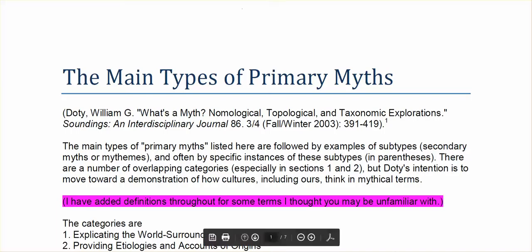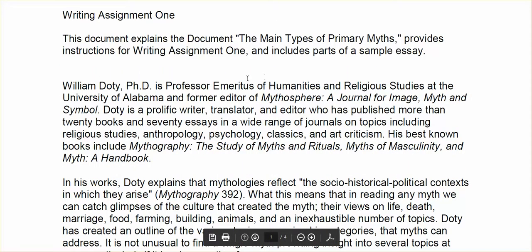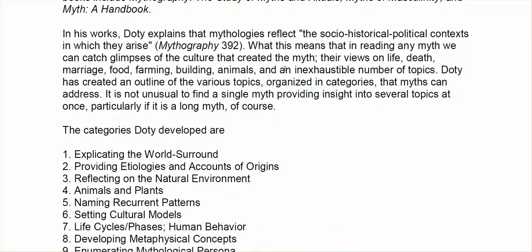Now in the other document — the assignment — Doty explains that mythologies reflect the socio-historical political context in which they arise. What he means is that when we read a myth, what we're doing is seeing that culture fresh in front of us — we're seeing their views on marriage, on farming, on animals, on life and death, any kind of topic you can think of. What myths do is illustrate for us, give us examples of how these people thought. So that's as close as we can get to some of these ancient people. They didn't have writing — this was all oral information that wasn't written down until many, many centuries later. So we don't have particular authors that we can refer to. These are just stories told by people to pass down their culture, their views.